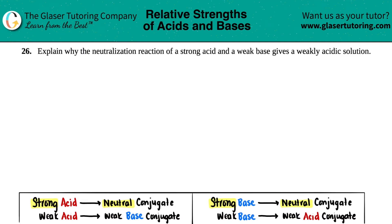Number 26. Explain why the neutralization reaction of a strong acid and a weak base gives a weakly acidic solution. This one is going to be a theoretical idea, a concept. There's really no math involved here. The answer is basically going to be words — I will show it in a balanced equation, but you can add whatever words you want for your answer.